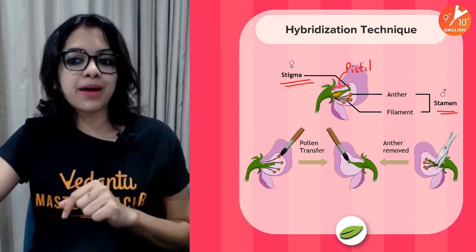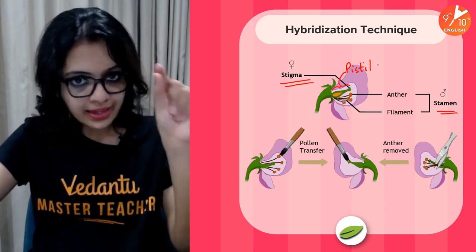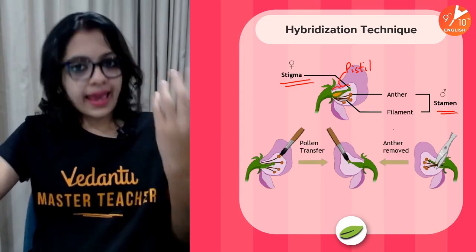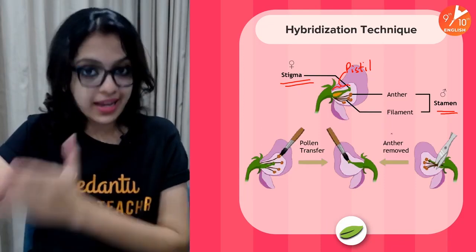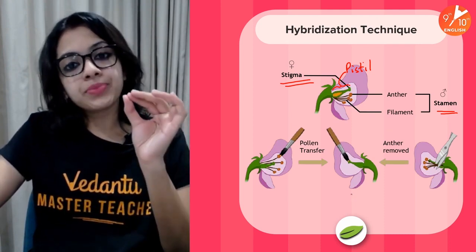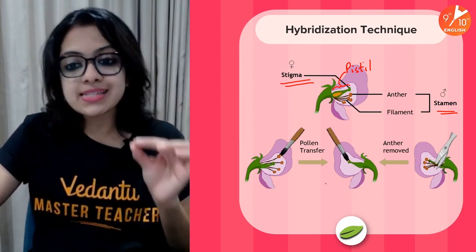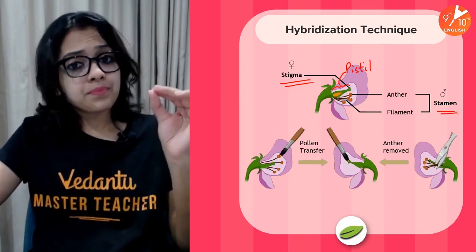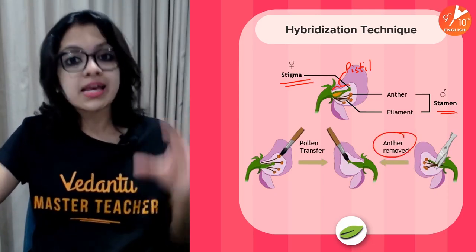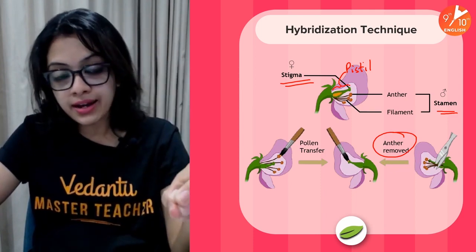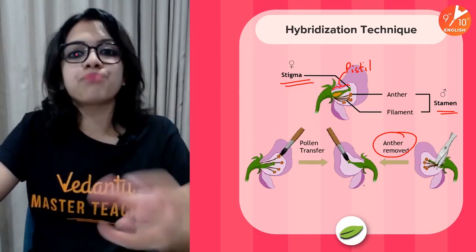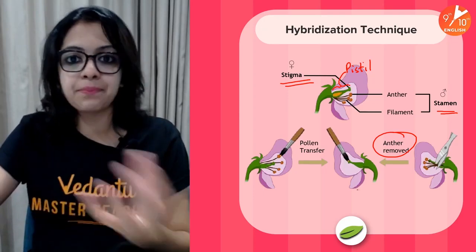The pea plant has bisexual flowers — it has both the female parts (stigma, pistil/carpel) and the male parts (stamen). To perform cross-pollination in a bisexual flower, we emasculate the flowers — that is the technique of removal of anthers — so that pollen from the same flower is prevented from being deposited on the same flower's stigma. This prevents self-pollination and ensures cross-pollination.